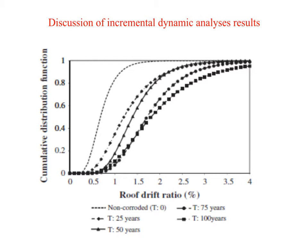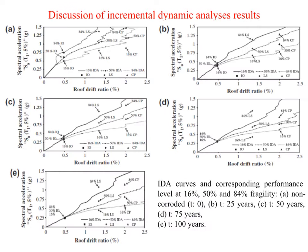The figures here indicate the cumulative distribution function of the roof drift ratio of each time period according to the design-based earthquake hazard level. The log-normal cumulative distribution function indicates that there is a serious increase in the roof drift ratio with increasing time due to the time-dependent effects of corrosion.